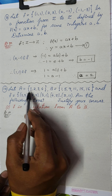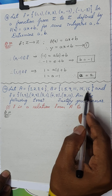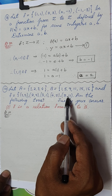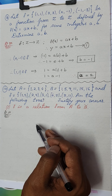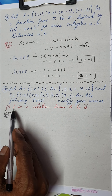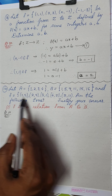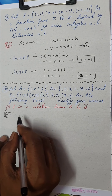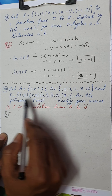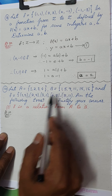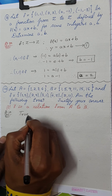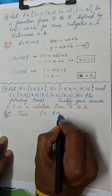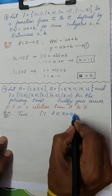Question number 10: let A = {1,2,3,4}, B = {1,5,9,11,15,16}, and f = {(1,5),(2,9),(3,1),(4,5),(2,11)}. Are the following true? First: is f a relation from A to B? Yes — f is a subset of A×B, and any subset of a Cartesian product is a relation. So this is true.